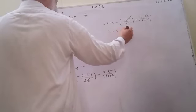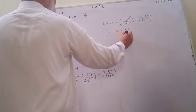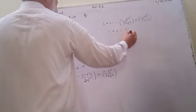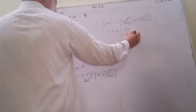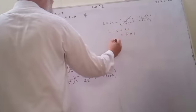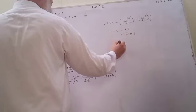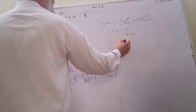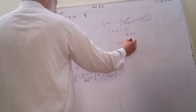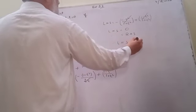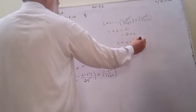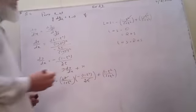The left hand side equals 0, which equals the right hand side. Therefore left hand side equals right hand side, and the result is proved.